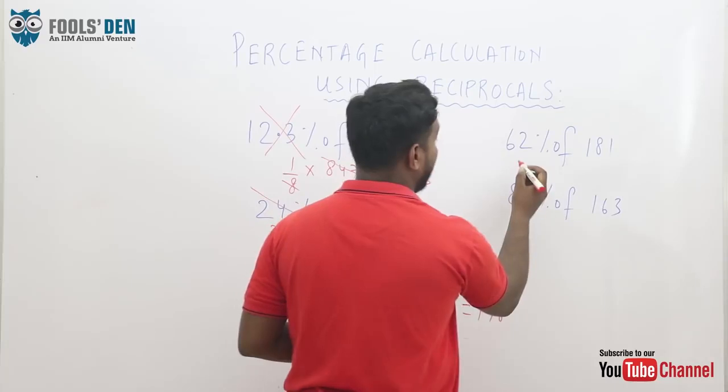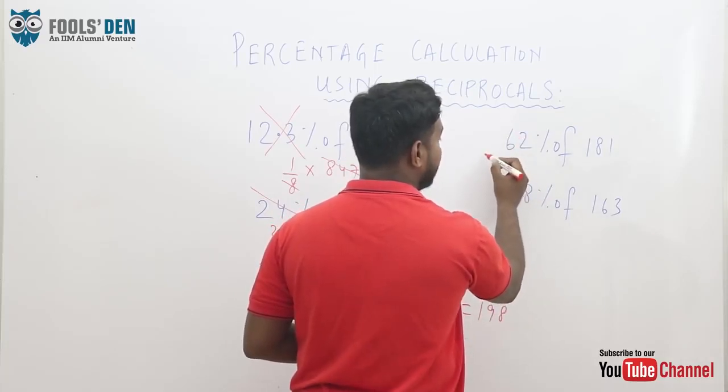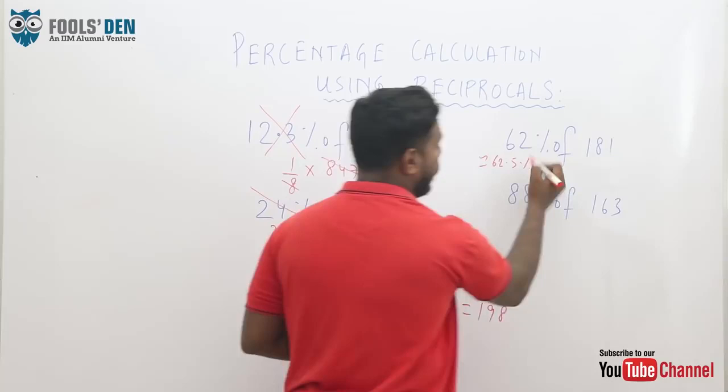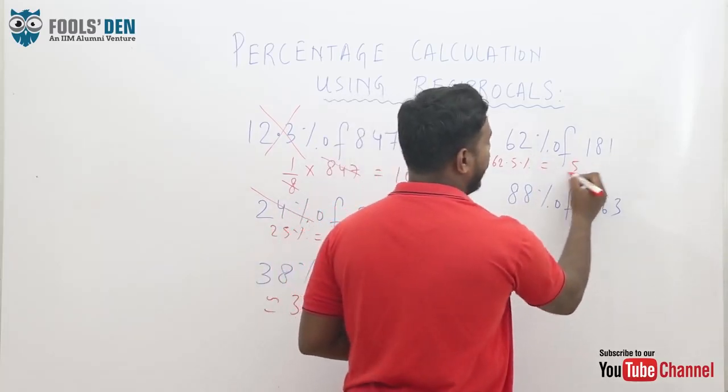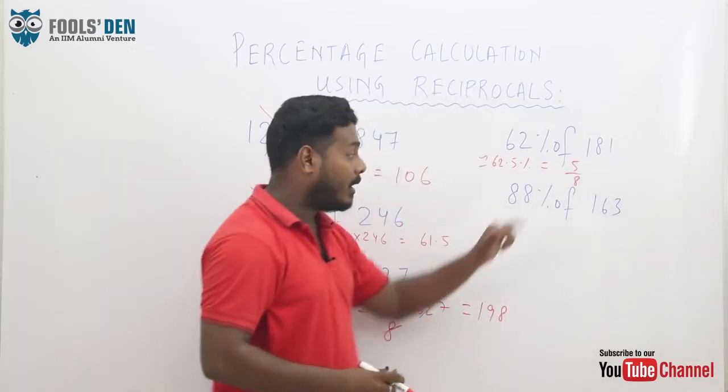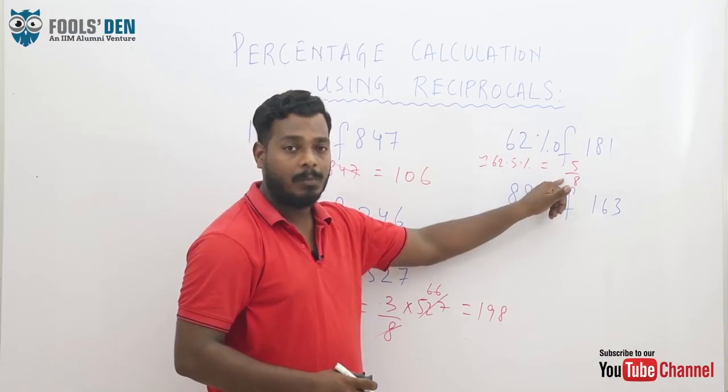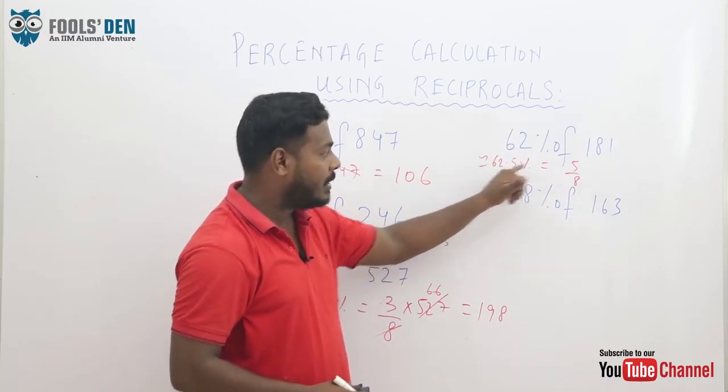Similarly, 62 percent. Again, using reciprocals, this can be approximated to 62.5 percent and which is nothing but 5 by 8. Another very standard and important value. 62.5 percent is 5 by 8.